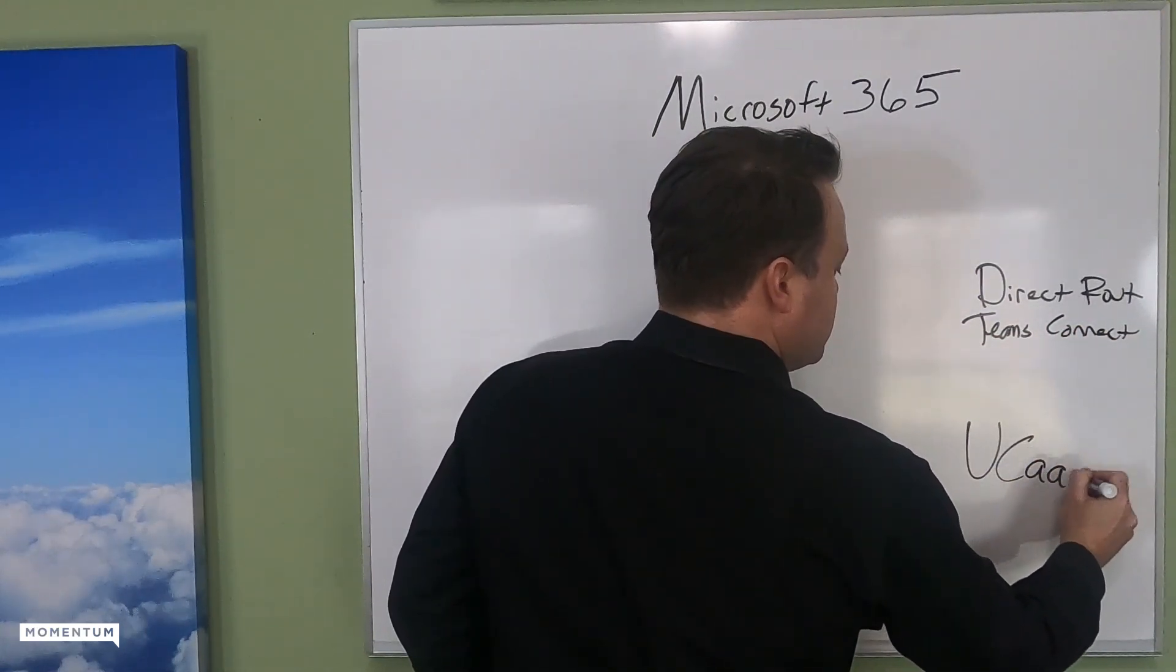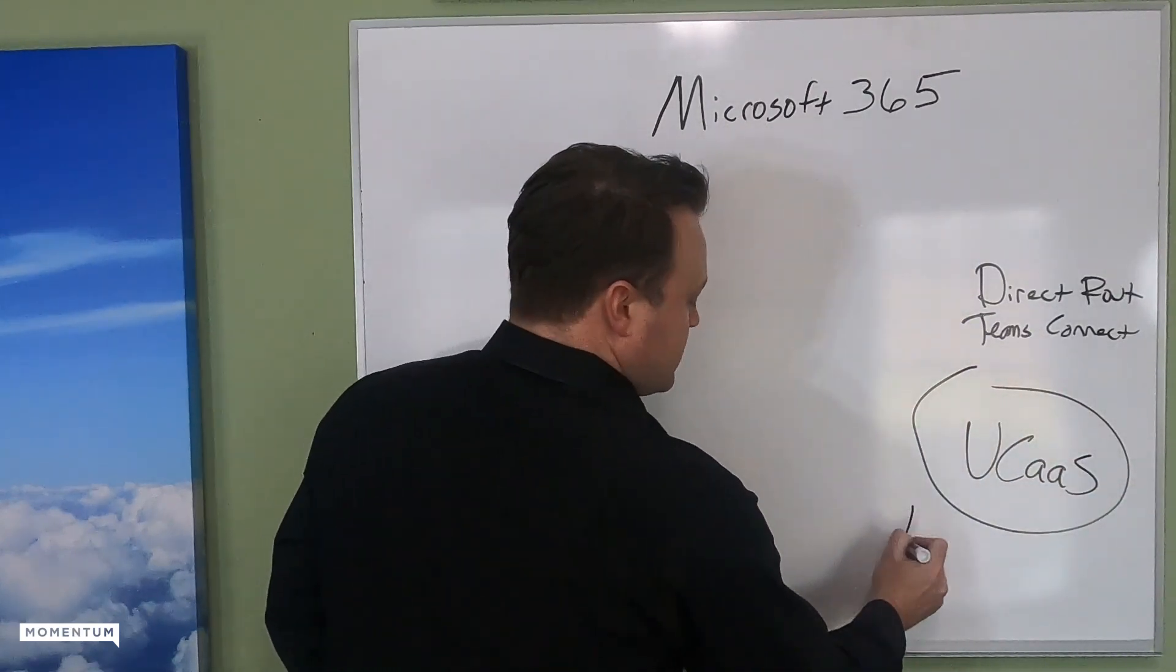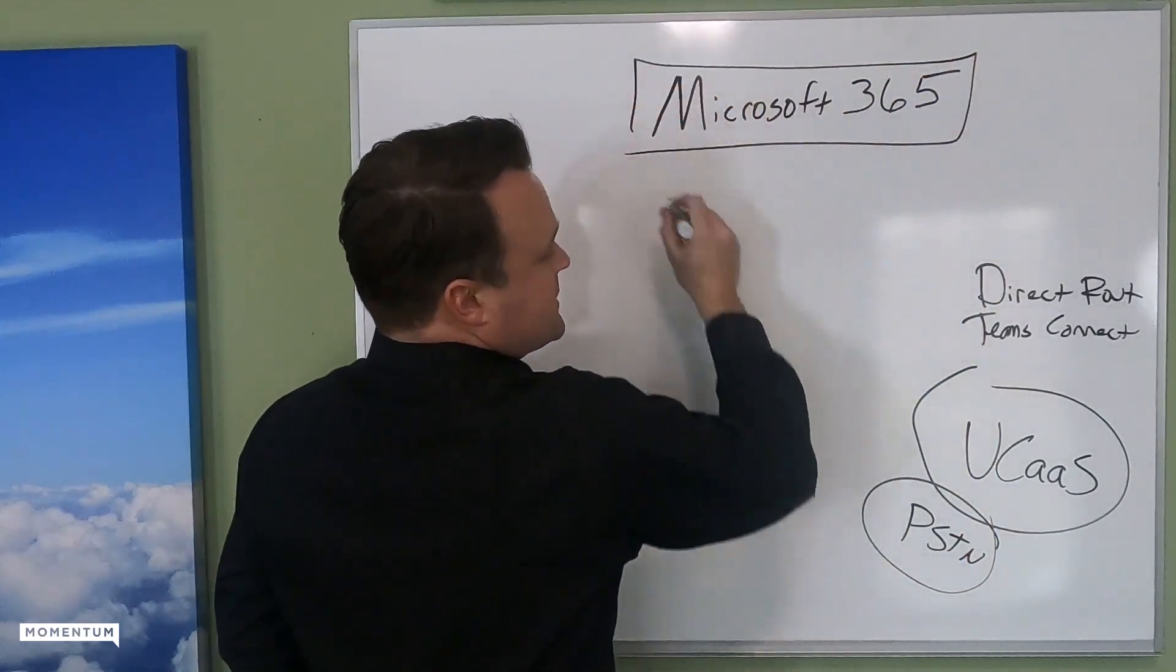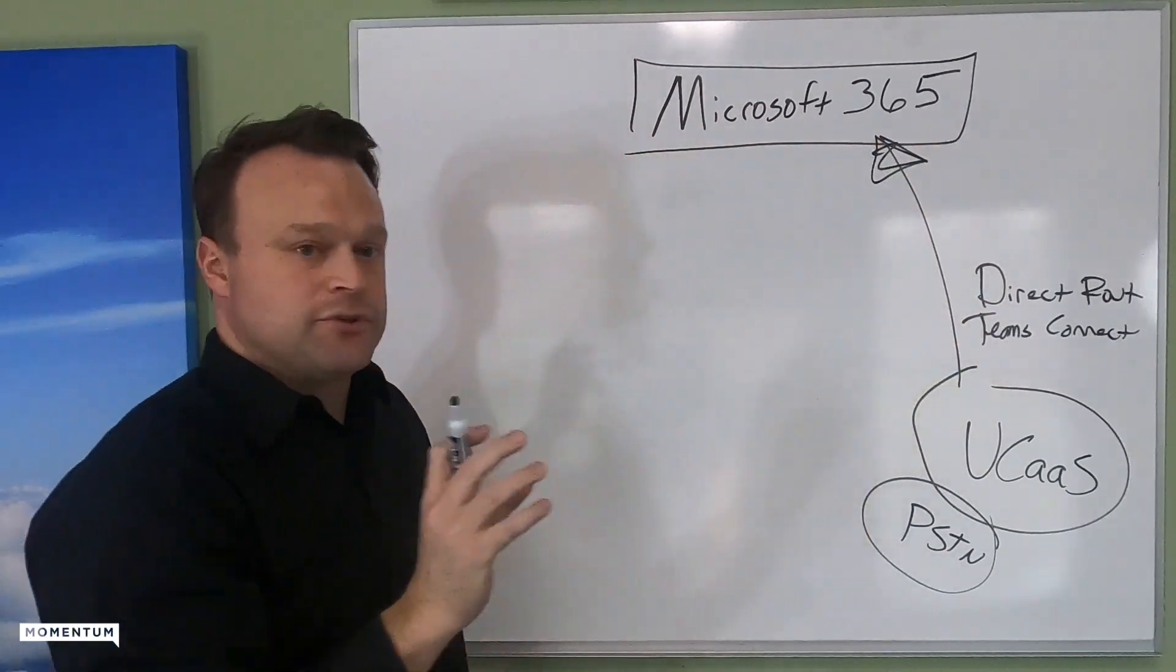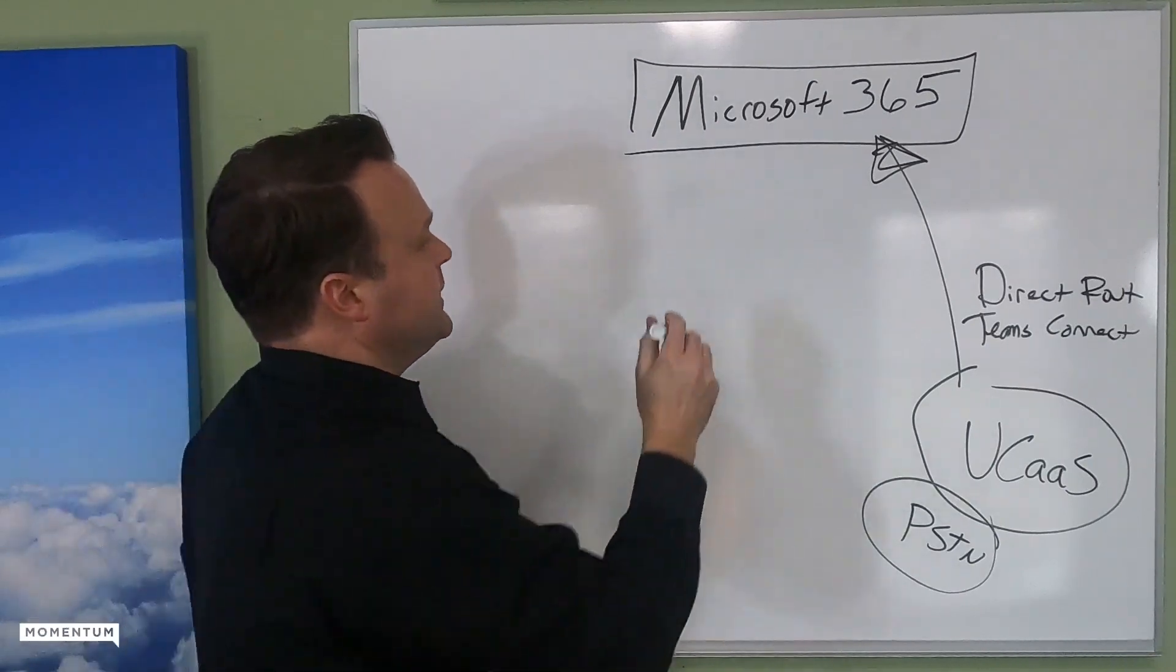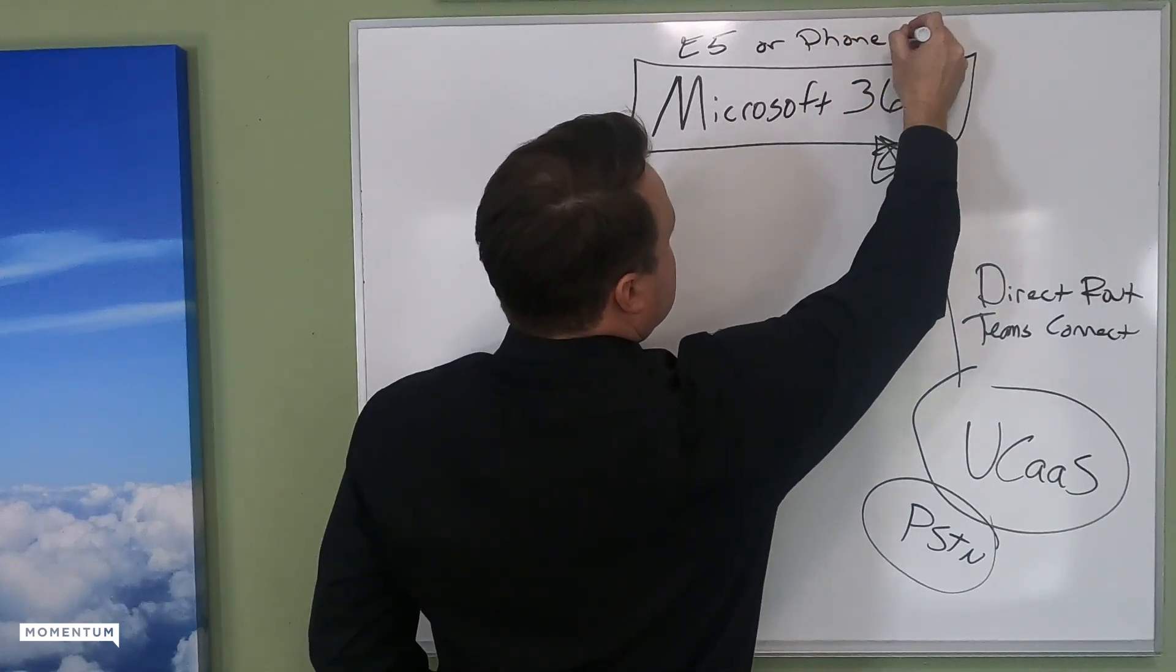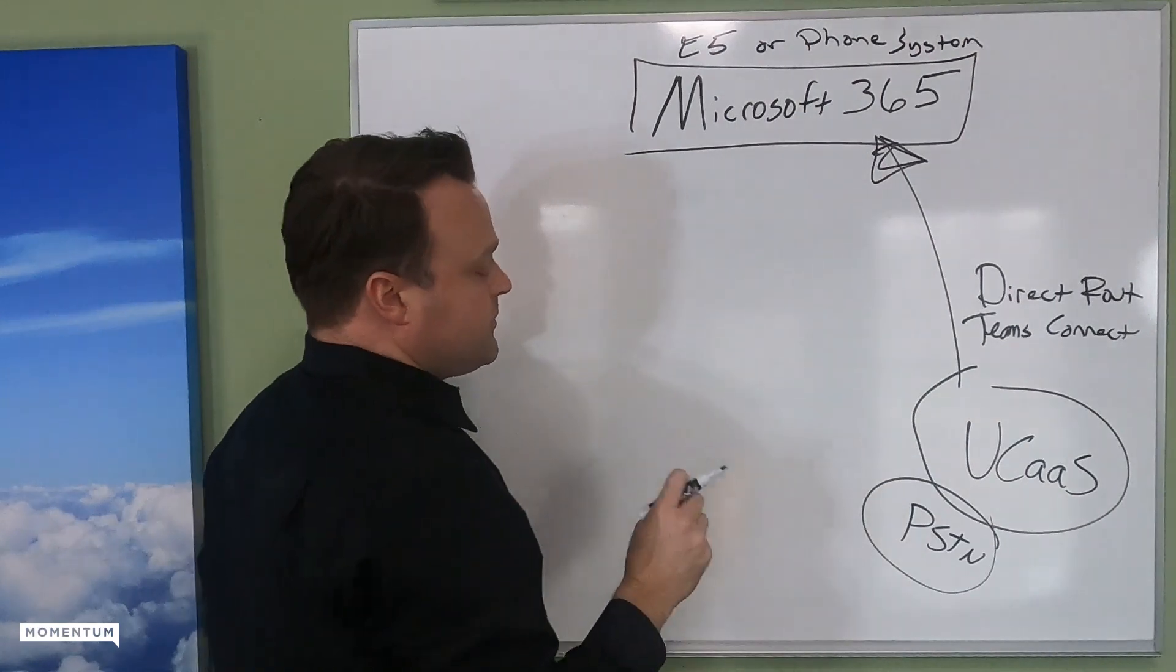What I'll tell you is the direct routing and Teams connector was all born out of the UCAS providers not wanting to miss out on the end users using Microsoft Teams as the front end. You should remember E5 or the phone system license is what these users already have. So they either have E5 or a phone system license.